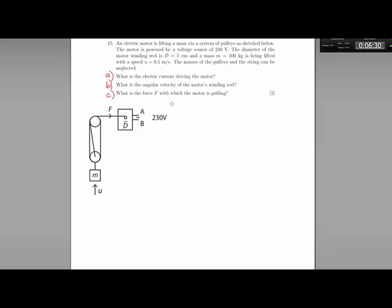Moving on to part B. What is the angular velocity of the motor's winding reel? We know that the relationship between velocity and angular velocity is V equals omega r, where r is the radius here. And we know that D is 5 centimeters. However, we don't know what V is. We know the speed that the block is lifting up here is v, but we don't know what V is here because it's going through these pulleys.